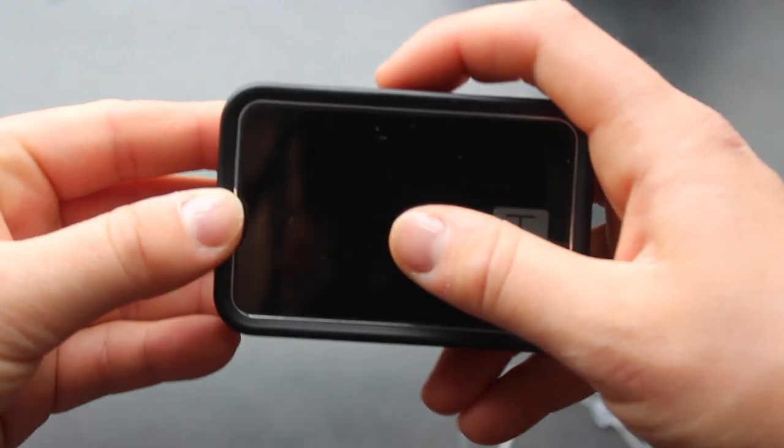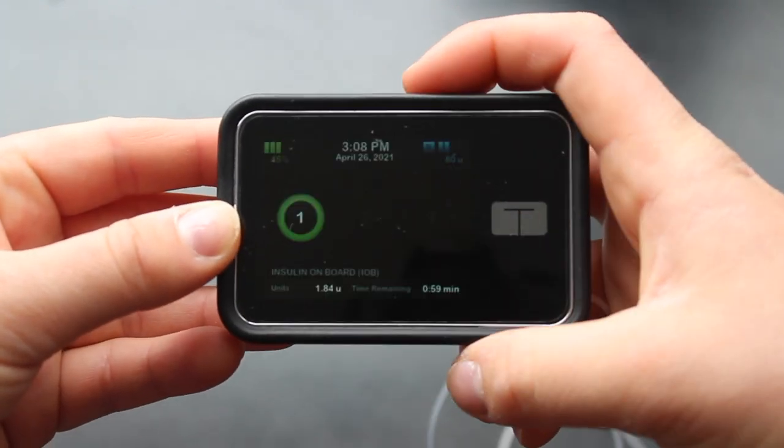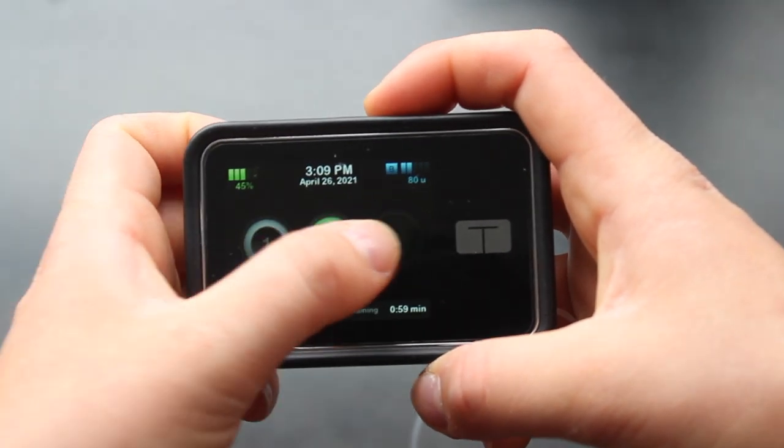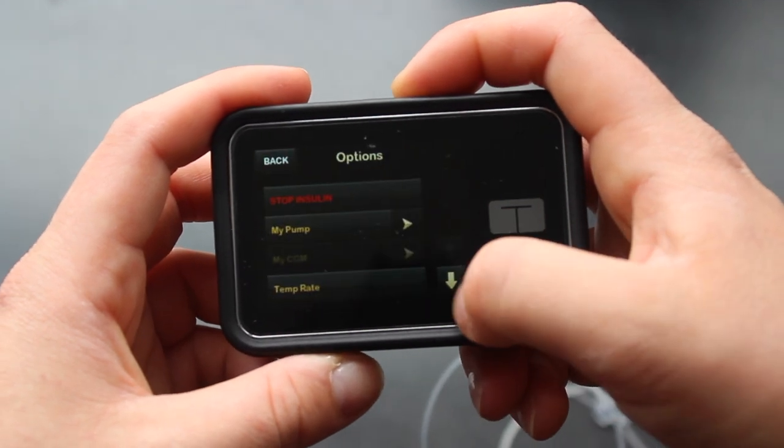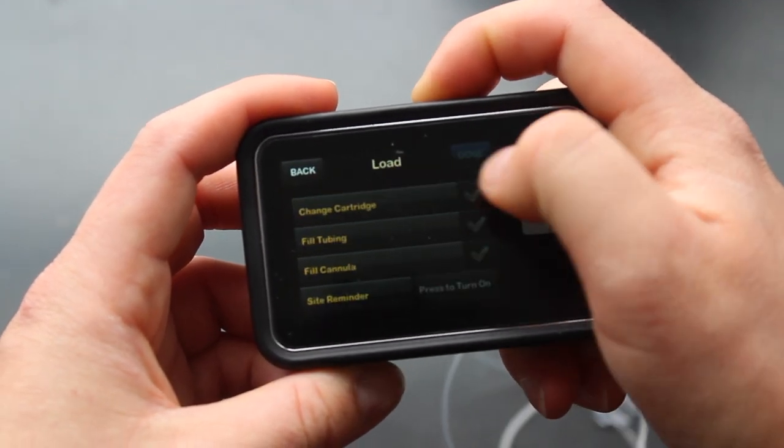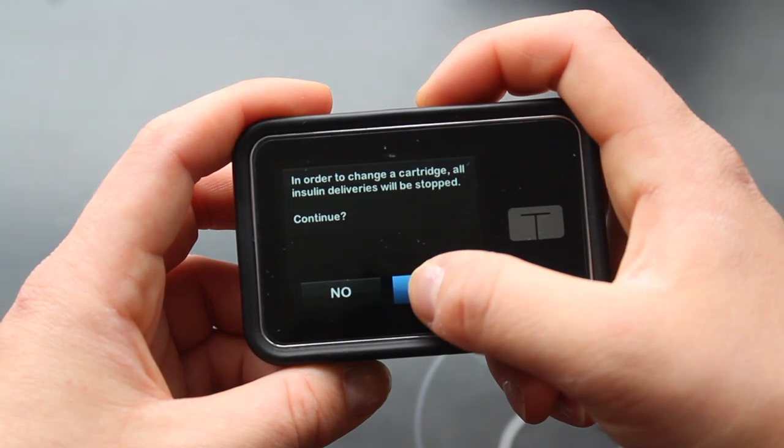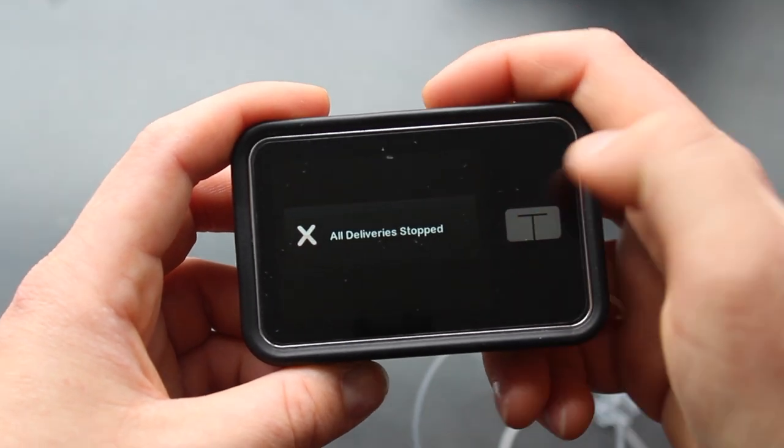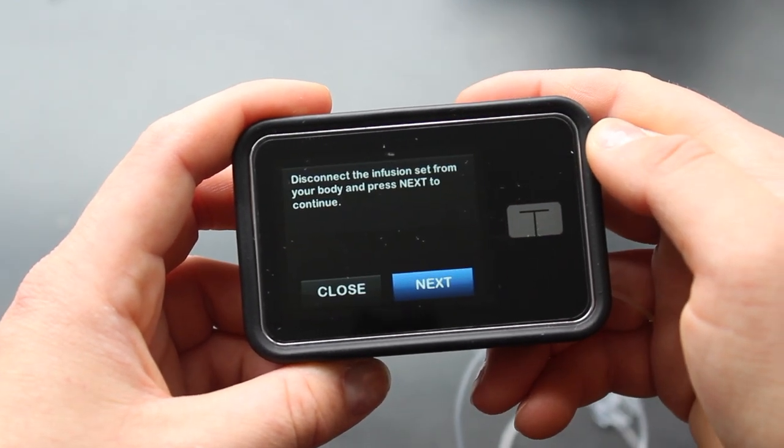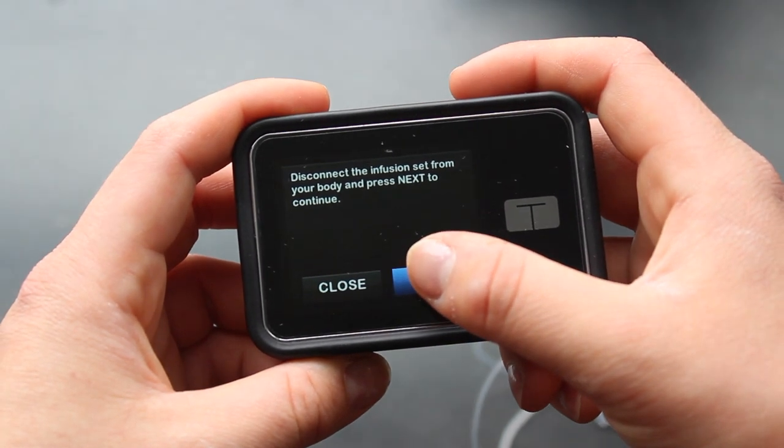The next thing I'm going to do is unlock my insulin pump using this button on the top, and then use the screen feature to unlock it. I'm going to go to options and down to that second page where it says load and change cartridge, and this will allow me to stop the deliveries so that my pump isn't trying to work while I'm changing the insulin.